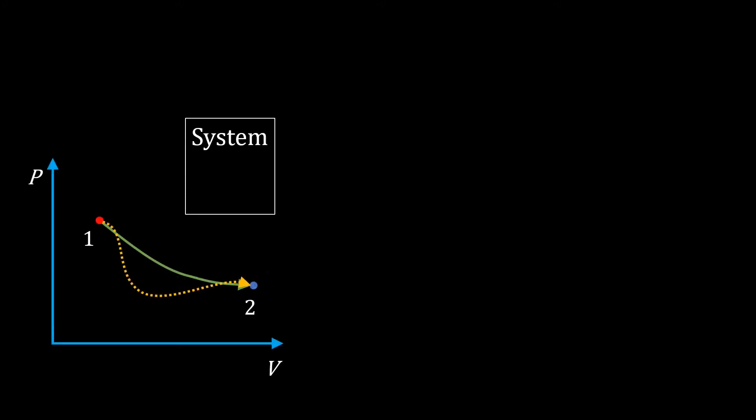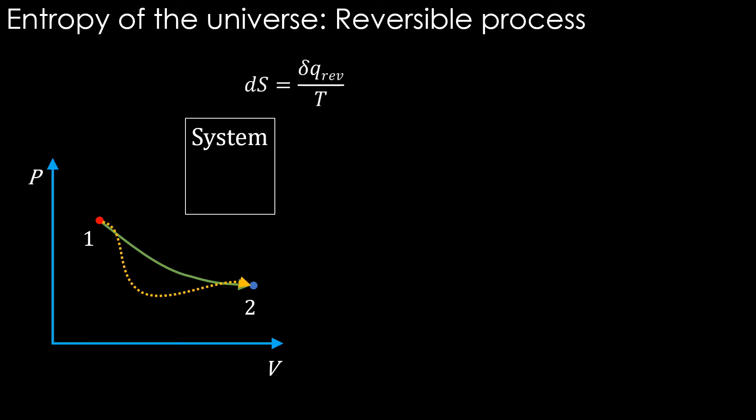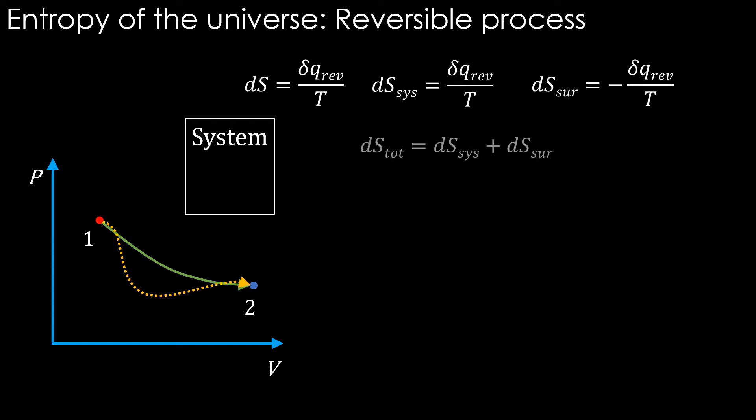Let's consider the reversible process first. We can say that Q divided by T is equal to the entropy change, because heat is reversibly taken from the surrounding and reversibly supplied to the system. For the system, dS_system is equal to dQ_reversible divided by T. For the surrounding, dS_surrounding is equal to minus dQ_reversible divided by T, since the heat is removed from the surrounding, the negative symbol is used.